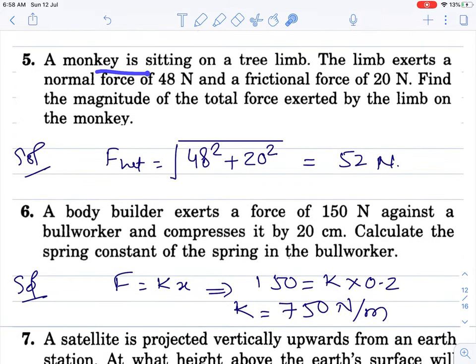Monkey is sitting on the tree limb. The limb exerts normal force of this much and friction this much. Find the magnitude of total force. Normal force is there, friction this side or other side. Friction and normal force are at 90 degrees always. If suppose limb is inclined, normal force comes like this, friction tends to be in opposite direction. Two forces at 90 degrees in any case. Vector law applies, 52 Newton.